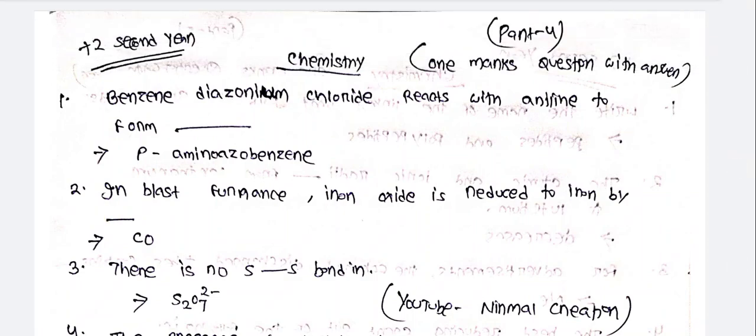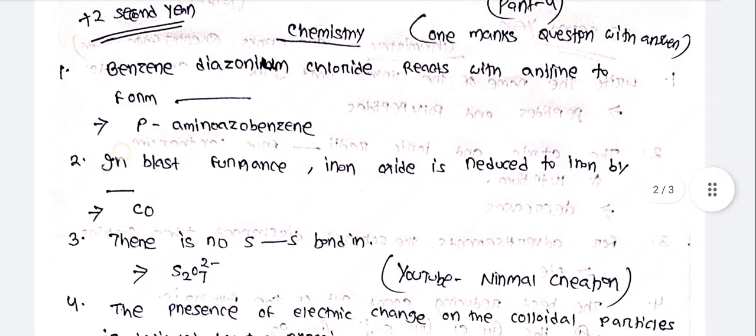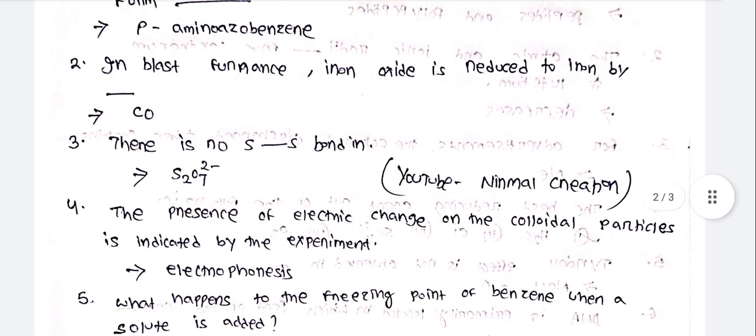Chemistry Part 4. We have seen the 3rd part of this video. Benzene diazonium chloride reacts with aniline to form p-aminoazobenzene.